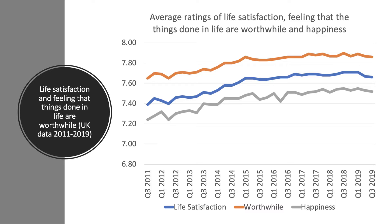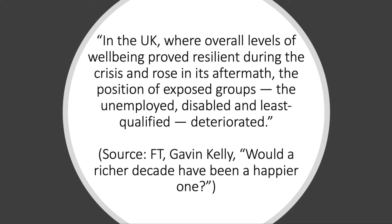A little evaluation point: this data is designed to come from a representative sample of society in the UK, but please bear in mind that well-being can vary for different groups. An interesting article from Gavin Kelly of the Resolution Foundation in December 2019 noted that in the UK, where overall levels of well-being proved resilient during the crisis and rose in its aftermath, the position of exposed groups — the unemployed, disabled, and least qualified — actually deteriorated. So the macro reported well-being can hide a lot underneath the surface.